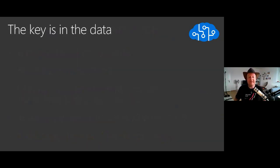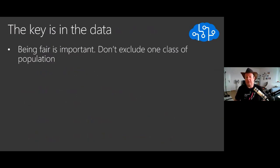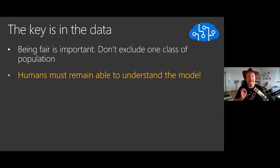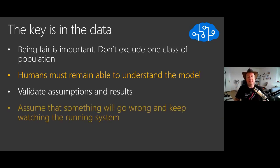What it means concretely is that you need to be fair to everyone when you gather your training data and validation data. But also you need to remain able to understand the predictions. In the case of the pneumonia, there was a human doctor who said that doesn't make sense, this asthma prediction doesn't make sense. You need to be able to understand the model, and this is very important, especially when models become more complex. You need to validate everything you do - validate your assumptions, validate your results, and always assume that something might go wrong because it probably will.